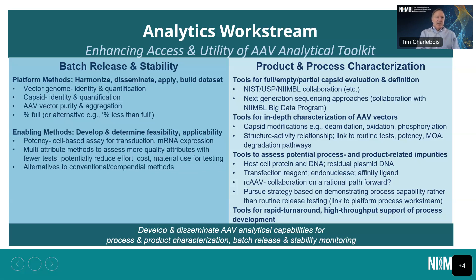There's development work, dissemination work, and broader access to process and product characterization tools of great interest. We've already got a quick-start project in collaboration with NIST, USP, and Nimble for methods to evaluate full, empty, and partial capsids. That program is advancing and data is being crunched now from a variety of methods across a number of organizations from the first study. We'd be interested in extending beyond that initial study to make methods more available to the community — that information we expect to come out sometime next year.